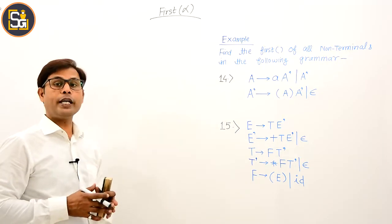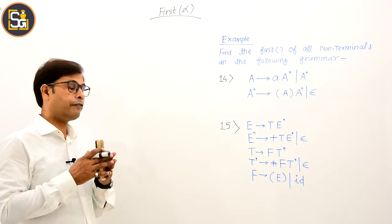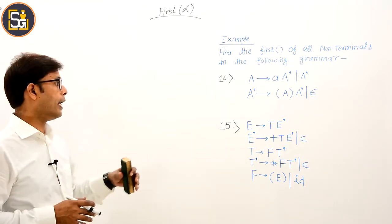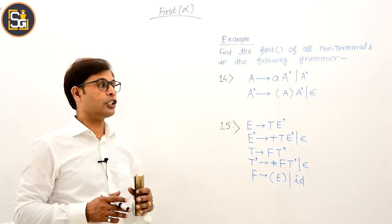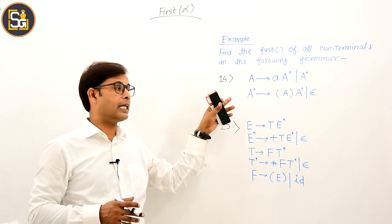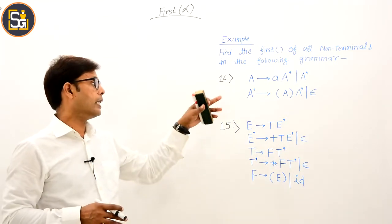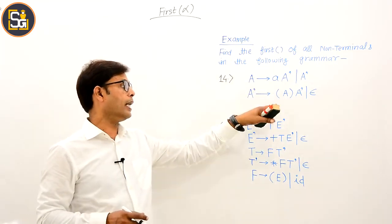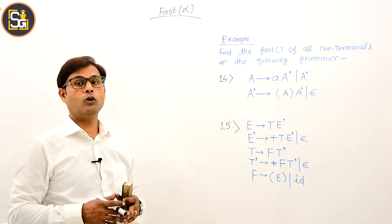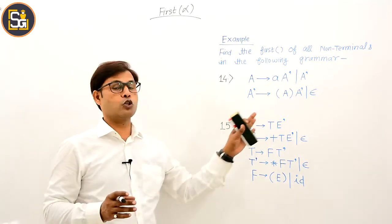Consider the following grammar and find the FIRST of non-terminals. This is the 14th question. The non-terminals are A and A-dash. The terminals are small a, opening parenthesis, and closing parenthesis. A null string (epsilon) is also present.